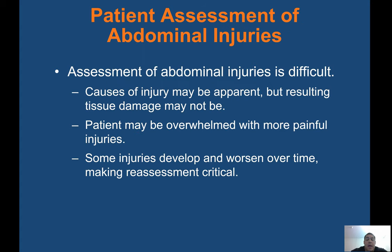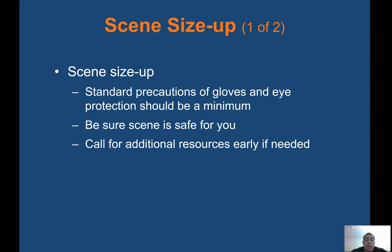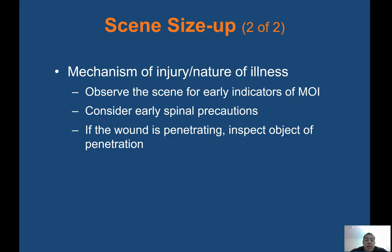Assessment of abdominal injuries is difficult. The causes of injury may be apparent, but the resulting tissue damage may not be. The patient may be overwhelmed with more painful injuries, and some injuries develop and worsen over time, making reassessment critical. For scene size-up: standard precautions — gloves and eye protection — should be a minimum. Make sure the scene is safe and call for additional resources early if needed. Observe the scene for early indicators of mechanism of injury, consider early spinal precautions, and inspect the object of penetration if the wound is penetrating.